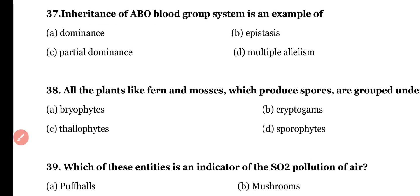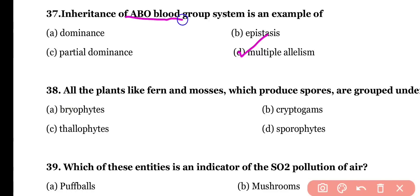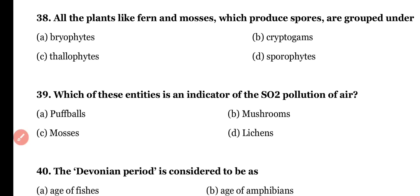Question number thirty-seven: inheritance of the ABO blood group system is an example of (a) dominance, (b) epistasis, (c) partial dominance, or (d) multiple allelism. The correct answer is option D — ABO blood group is an excellent example of multiple allelism.